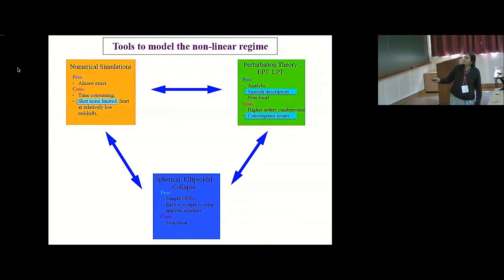And the third way is you restrict your system to simple geometries like spherical or ellipsoidal collapse. The advantages here is that the system reduces to just second order differential equations which can be then coupled to semi-analytic schemes like excursion sets and so on. But the problem is that these are often non-local and there is no mode coupling, which is an important feature of non-linearity. And these arrows here indicate that you can mix and match depending on the application, these three broad classes of tools.